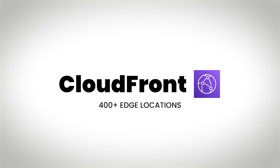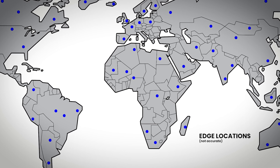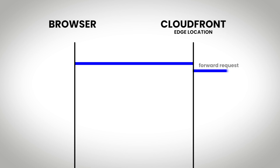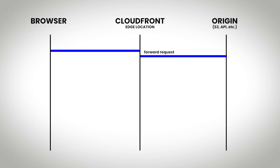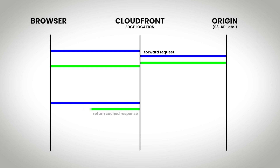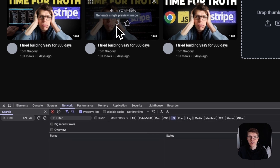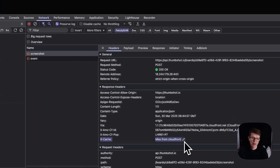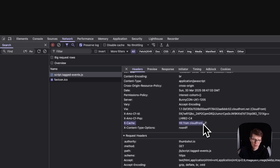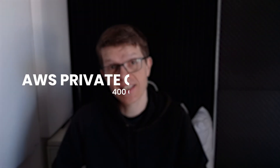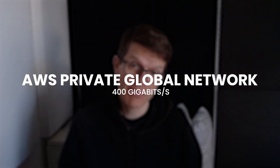CloudFront has over 400 edge locations — data centers positioned around the world close to where users actually are. When someone visits your site, the request goes to the nearest edge location. CloudFront then routes it to the right place, whether an S3 bucket, API Gateway endpoint, or something else. If that destination is far away, CloudFront can cache the response so future users get an instant reply. For example, when you access my thumbnail tool, everything goes through CloudFront. The API call to take a screenshot returns a response with a CloudFront header showing no caching, but when my browser loads a JavaScript file, you'll see the response is cached. Even when CloudFront isn't caching, data travels through AWS's private global network, which is significantly faster than the public internet.